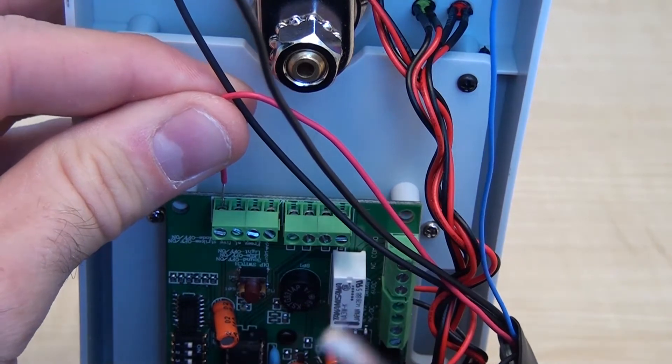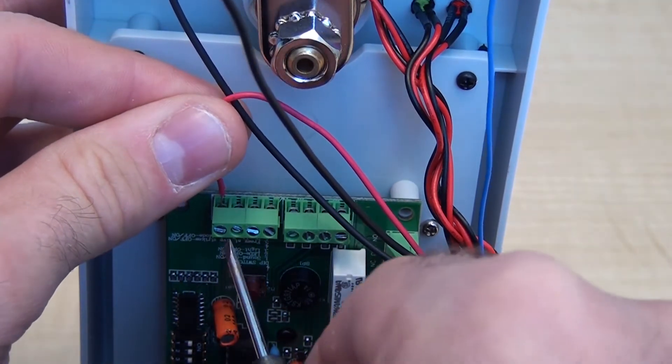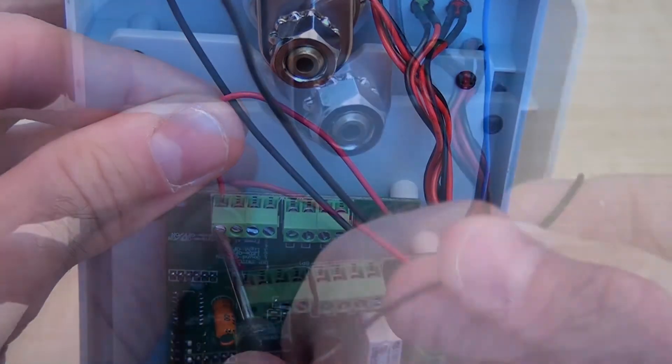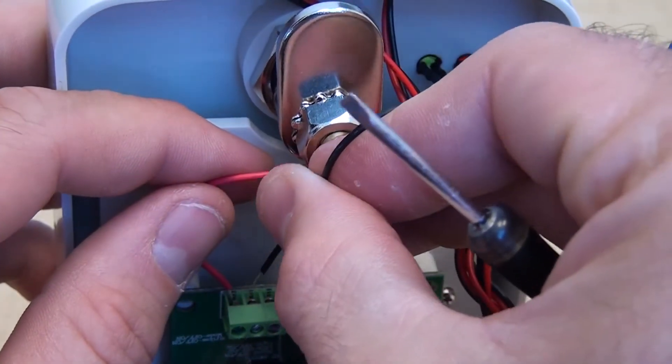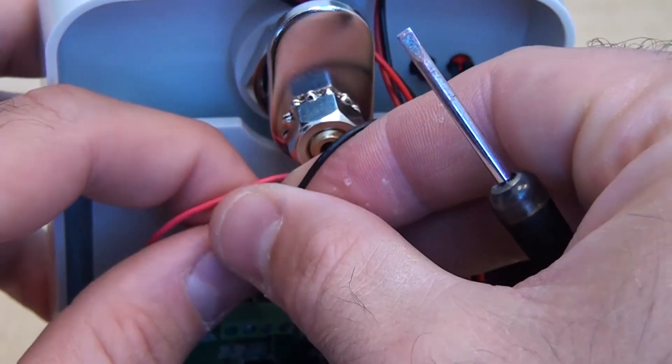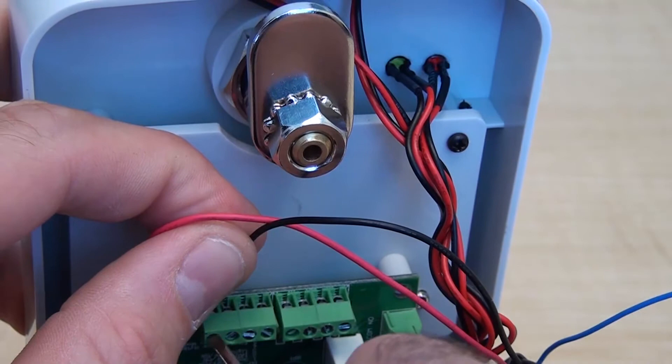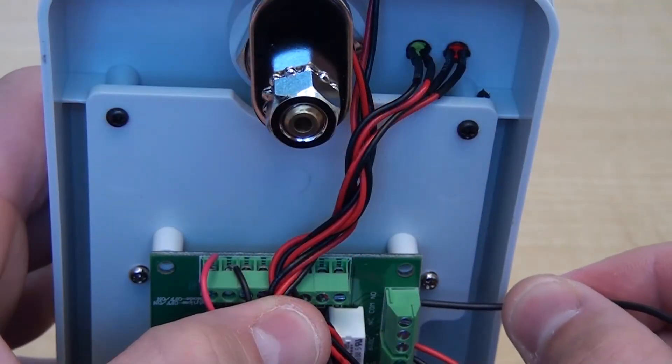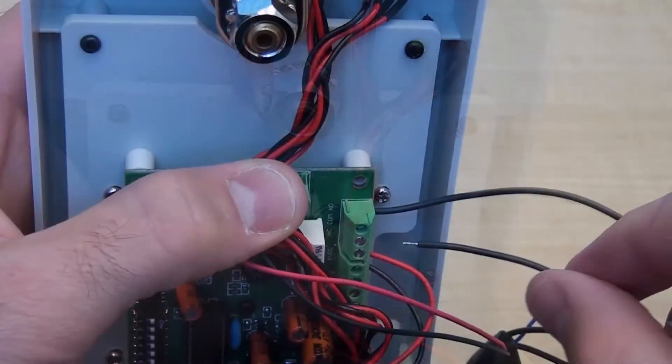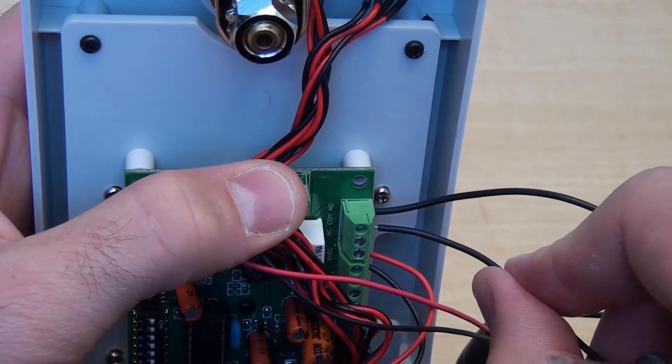Connect the red 9-volt wire to the V positive terminal on the board as shown. Connect the black ground to the V negative terminal as shown. The two thick black wires connect on the side of the board in the normally open and common terminals.